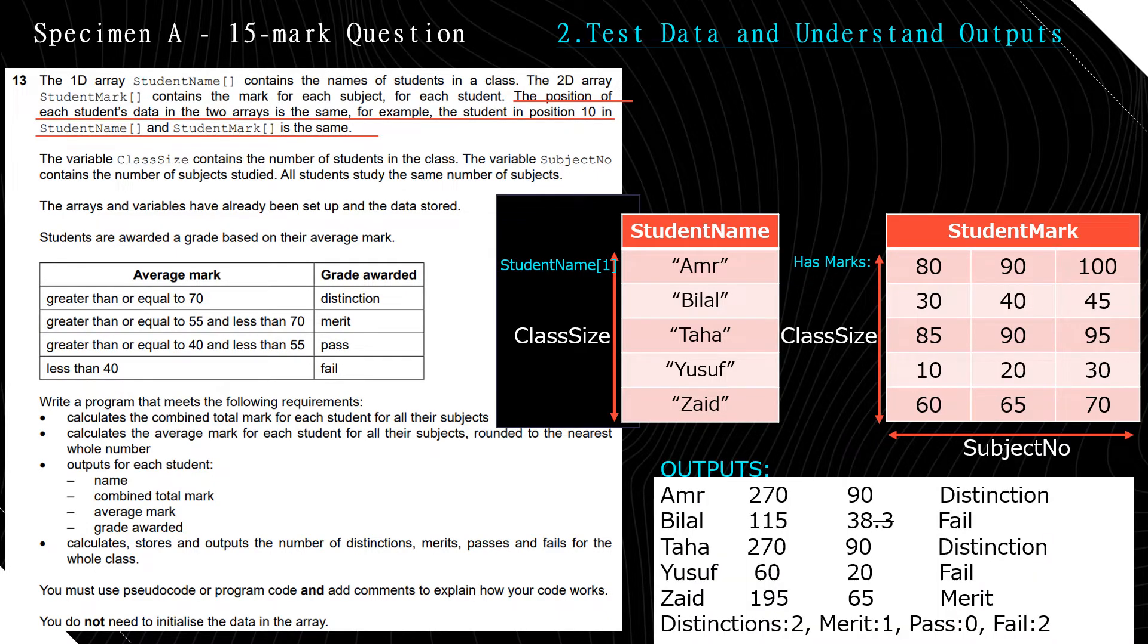All right, let's keep reading a little bit more. So we talked about the arrays and variables. Students are awarded a grade based on their average mark. If their average mark is greater than or equal to 70, the grade is distinction. If it's greater than or equal to 55 and less than 70, the grade is merit. If it's greater than or equal to 40 and less than 55, it's pass. And finally, if the average mark is less than 40, then the grade awarded is fail.